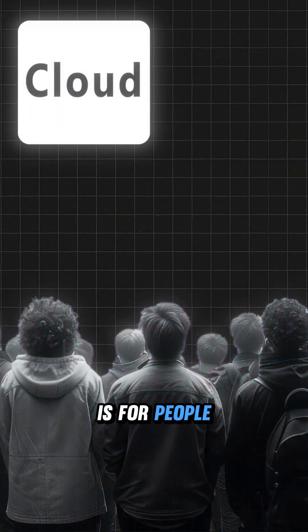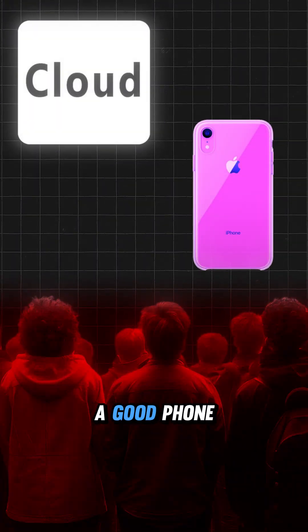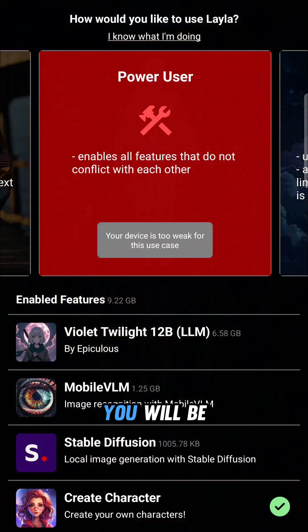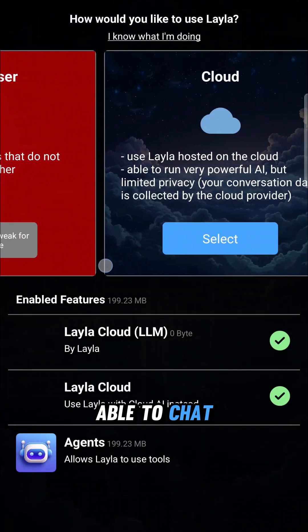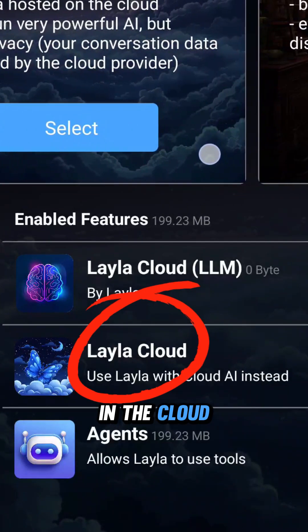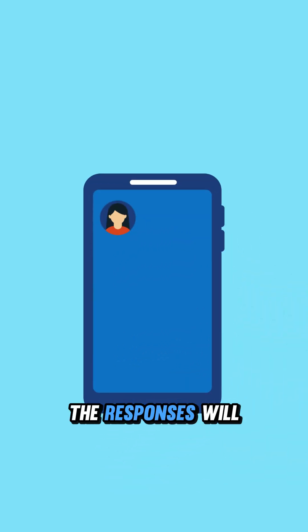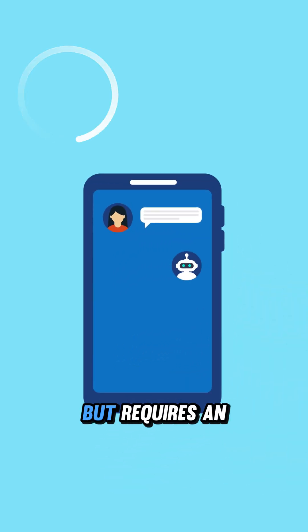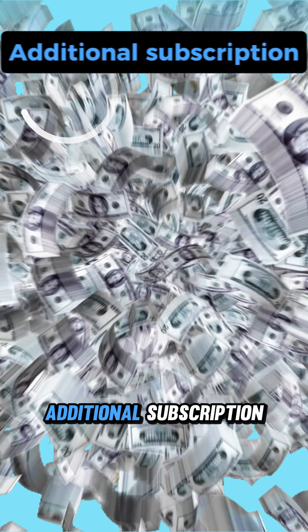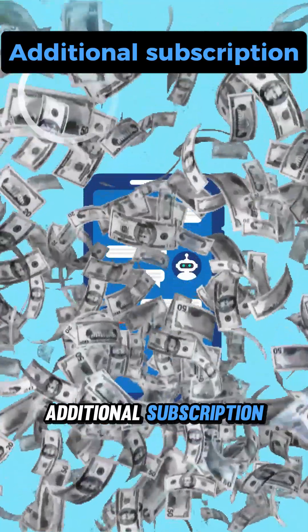The cloud option is for people who don't have a good phone. You will be able to chat with AI models in the cloud. The responses will be fast, but it requires an additional subscription.